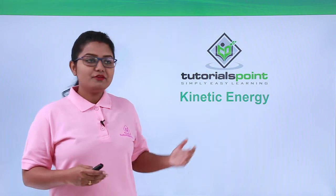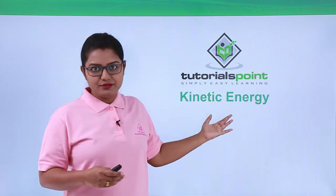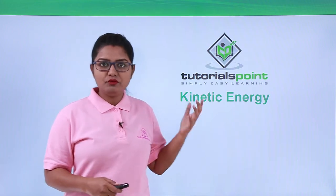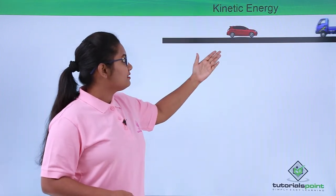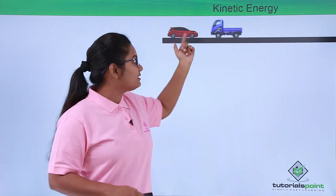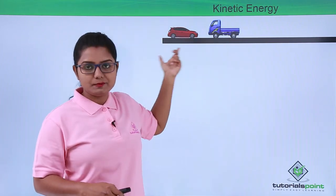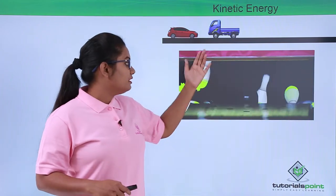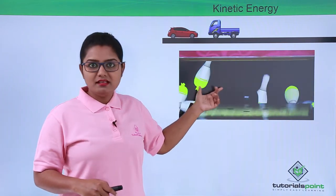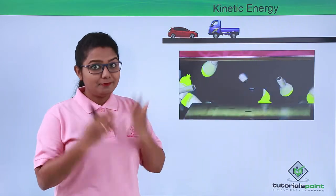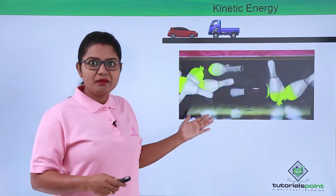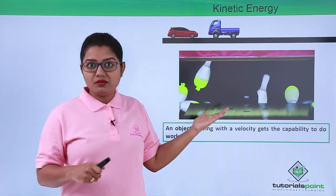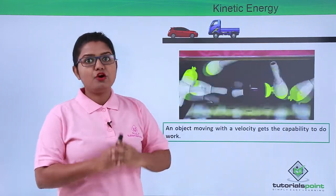In this video we are going to talk about kinetic energy. In the previous video where we talked about energy, we looked at some examples. The first one was when a moving truck hits a stationary car, the car gets displaced from its place to a certain distance. The second example was when a bowling ball hits the pins, the pins are thrown away from their places. From these two examples we concluded that an object moving with a certain velocity has the capability of doing work.